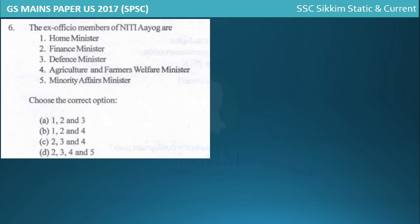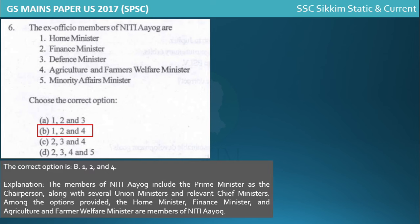The next question asks about ex-officio members of Niti Aayog. Among the options, the correct answer is options one, two, and four - Home Minister, Finance Minister, and Agriculture and Farmers Welfare Minister. The Prime Minister is definitely the chairperson of Niti Aayog, and these Union Ministers are members of Niti Aayog.